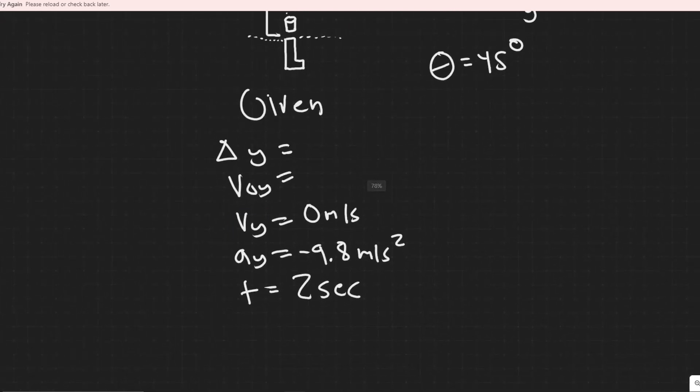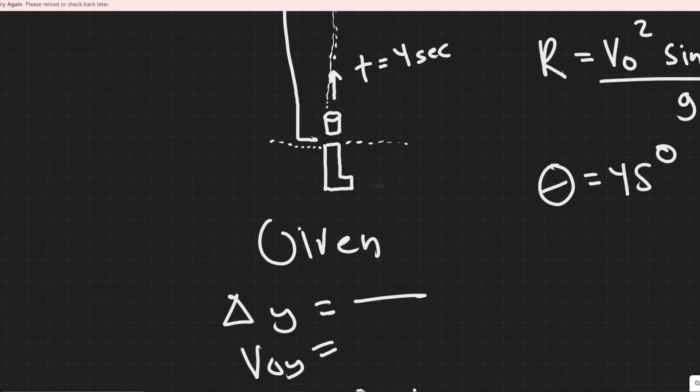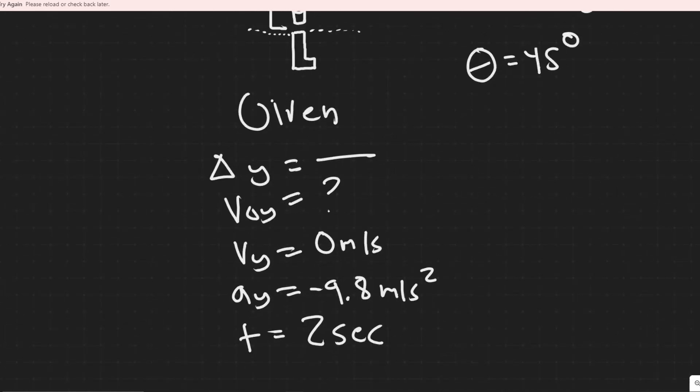Notice v sub y is our velocity at the end of the interval, which is that point. And I said, at that point, it's its maximum height. So v sub y is just 0 meters per second. Notice we have three kinematic variables, and you only need three to solve for something. Delta y, we actually don't need. And we want to find the initial velocity in the y. We just want to find the velocity straight up. That's what we're going to be solving for here. I'll just say equals question mark.